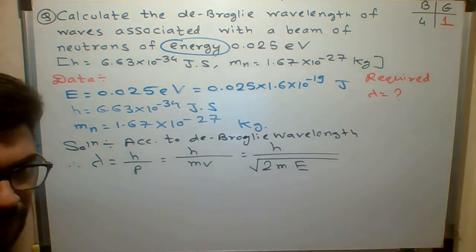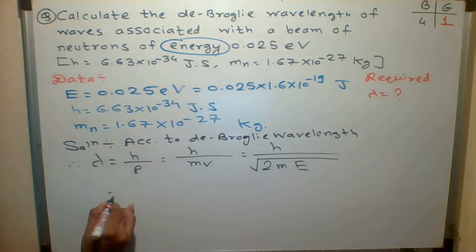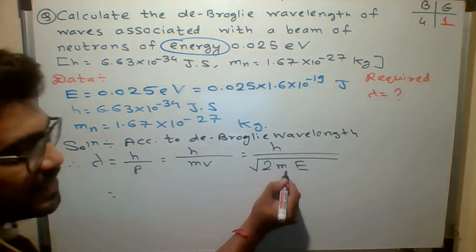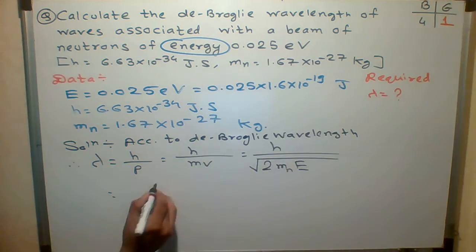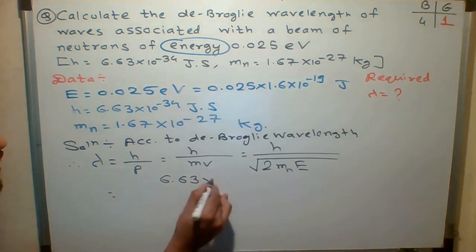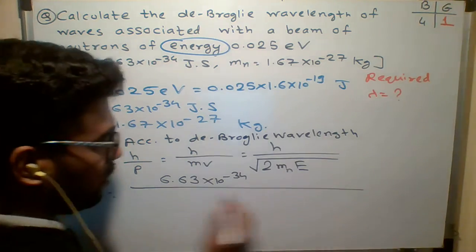Very good. So students, what is h value? We know the value of h. So here M stands for mass of neutron. So what is h here? 6.63 into 10 to the minus 34, upon...